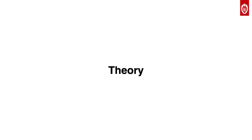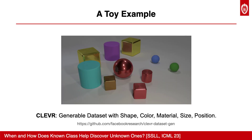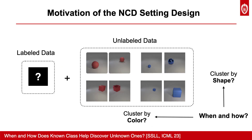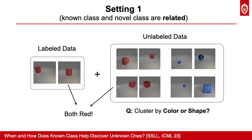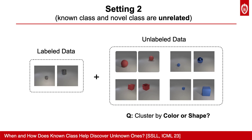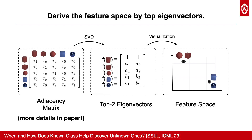Now let me introduce the theory. We start with a toy example with 3D shapes. In this toy example, we consider unlabeled data with red sphere, red cube, blue sphere, and blue cube. Obviously, they can be clustered by either color or shape. With the impact of known classes in labeled data, we want to know the cluster result of these unlabeled samples. In the first setting, we consider the known class as red cylinder, which is strongly related to red color samples in unlabeled data. While in the second setting, we consider the known class as gray cylinder, which is unrelated to any unlabeled samples in color or shape. In these settings, we can analyze the cluster result from the feature space derived from top eigenvectors of the adjacency matrix.